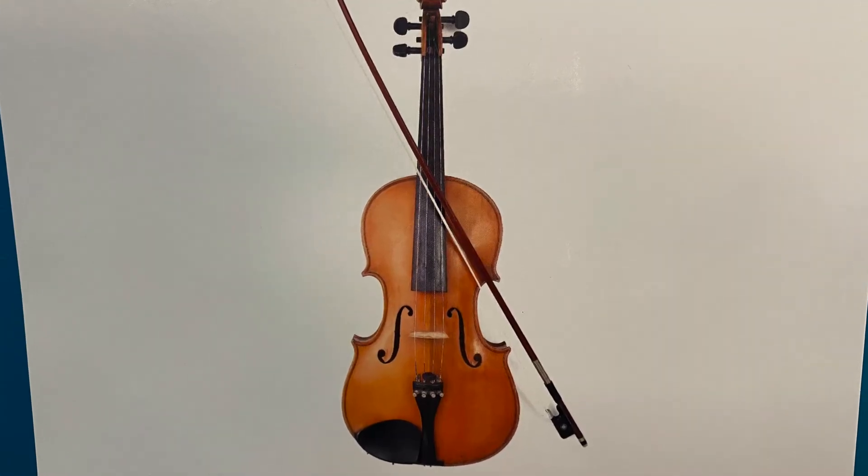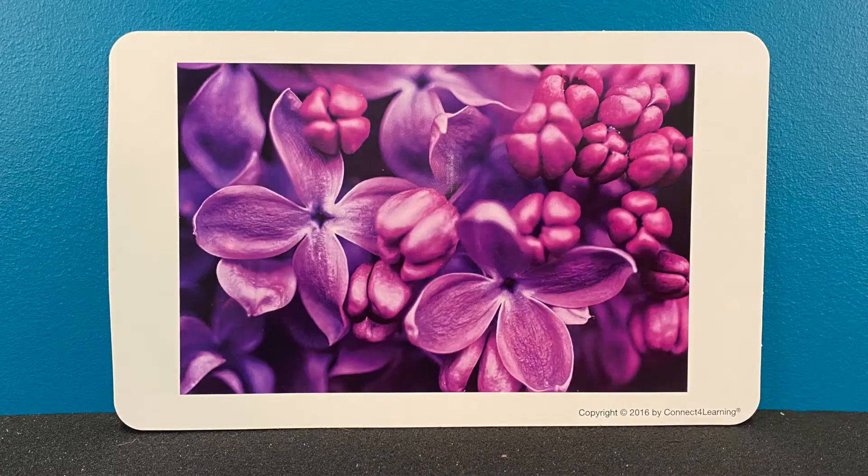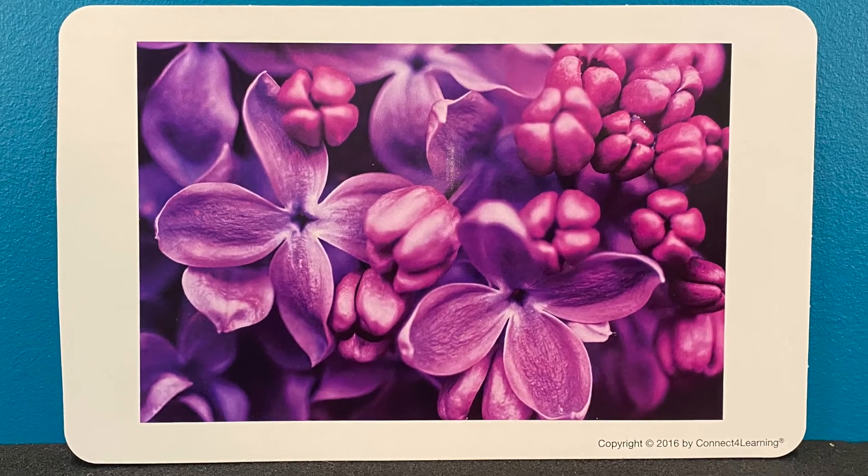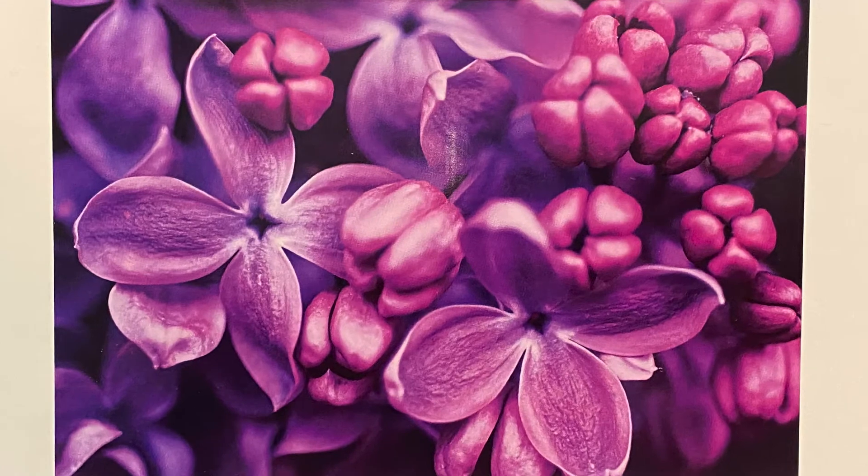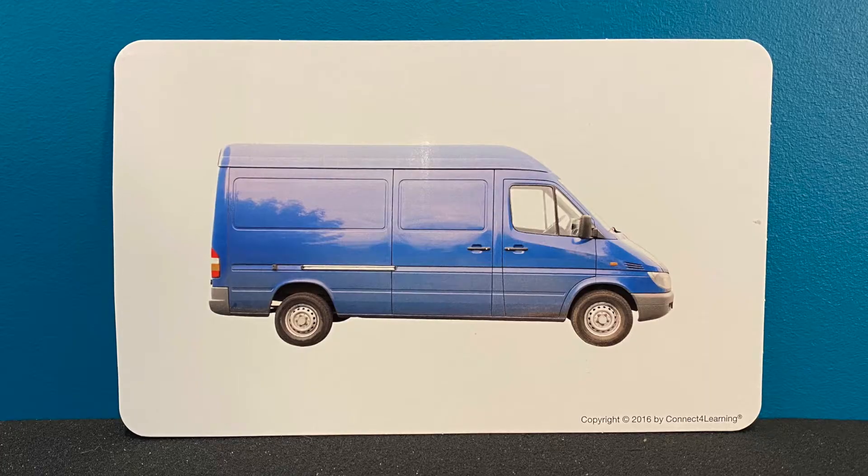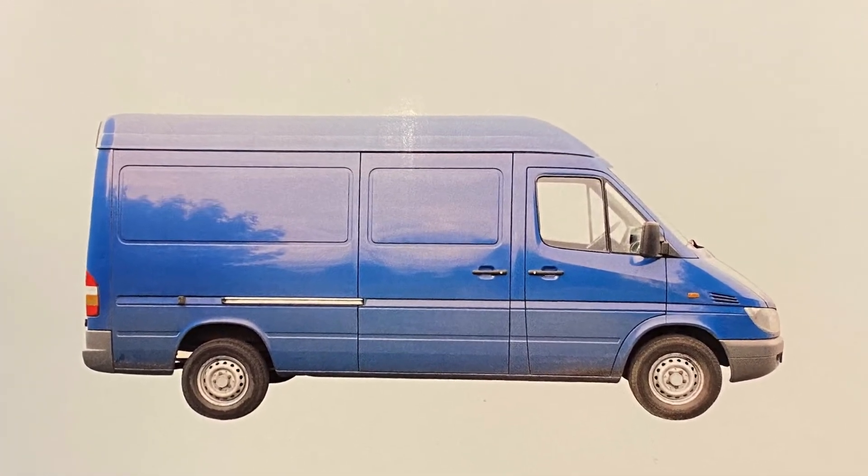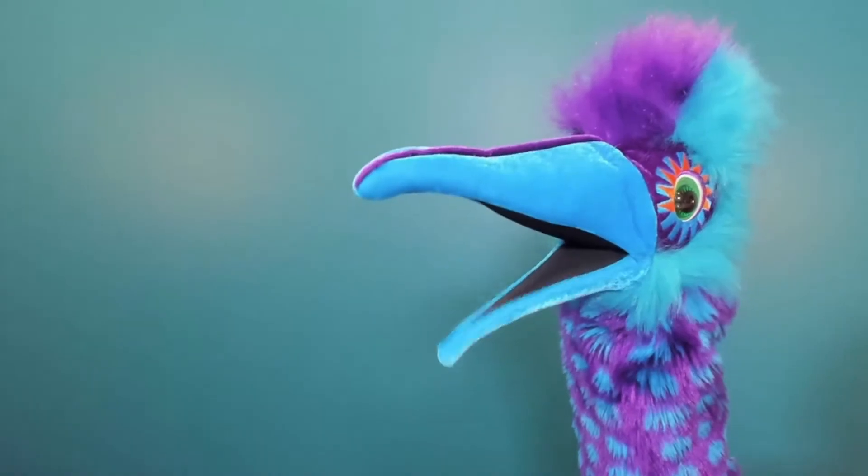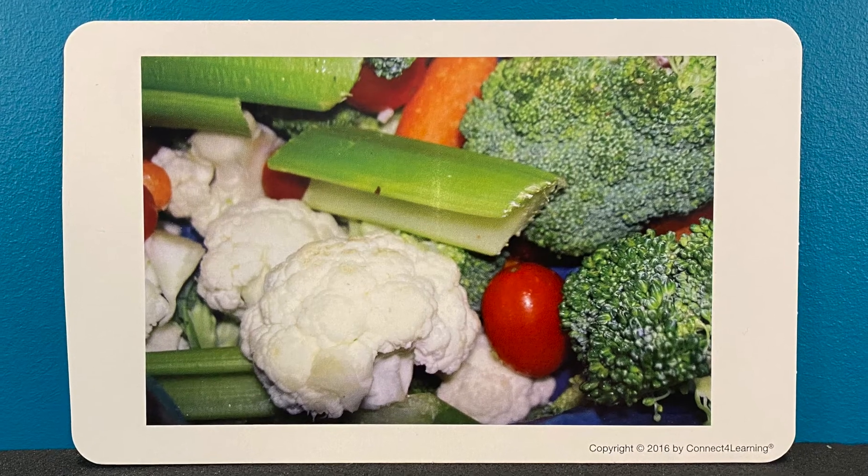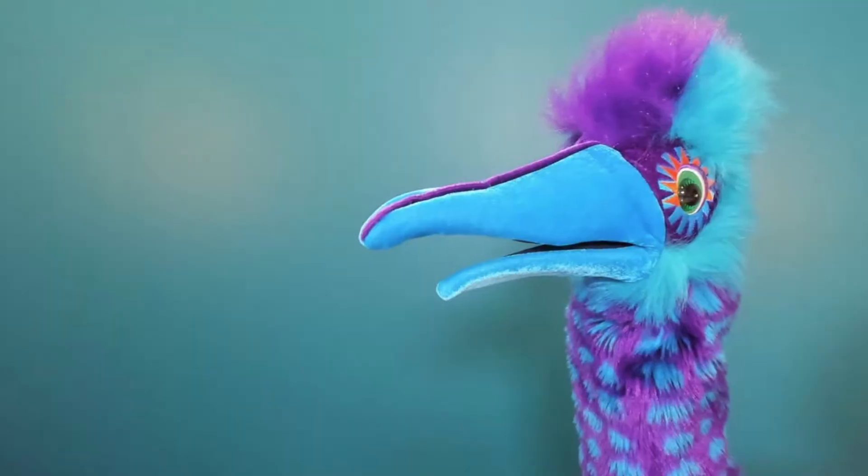What instrument is this? Violin. What type of flowers are these? Violets. What type of vehicle is this? Van. What food is this? Vegetables.